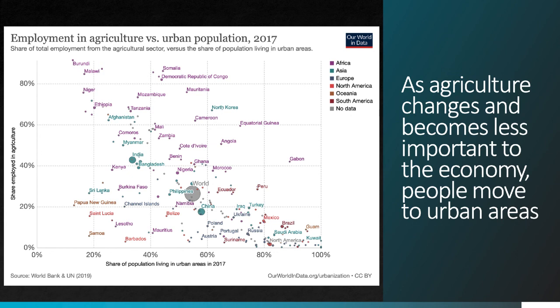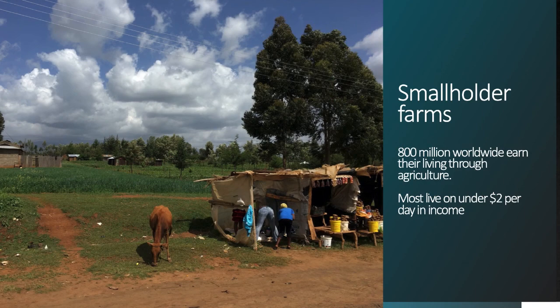Countries with very little agricultural employment also tend to be very urbanized. For most of human history, farms were small, and it's only in the last 70 years, mostly in wealthy countries, where this has changed. Around the world today, particularly in low and middle-income countries, many people continue to make a living through agriculture as smallholder farmers with only a few acres of land. There are about 800 million people worldwide who make their living this way, most living on under $2 a day, at or below the World Bank poverty line. Young people in these settings often want to move to cities in search of better jobs, access to education, and improved economic opportunity.